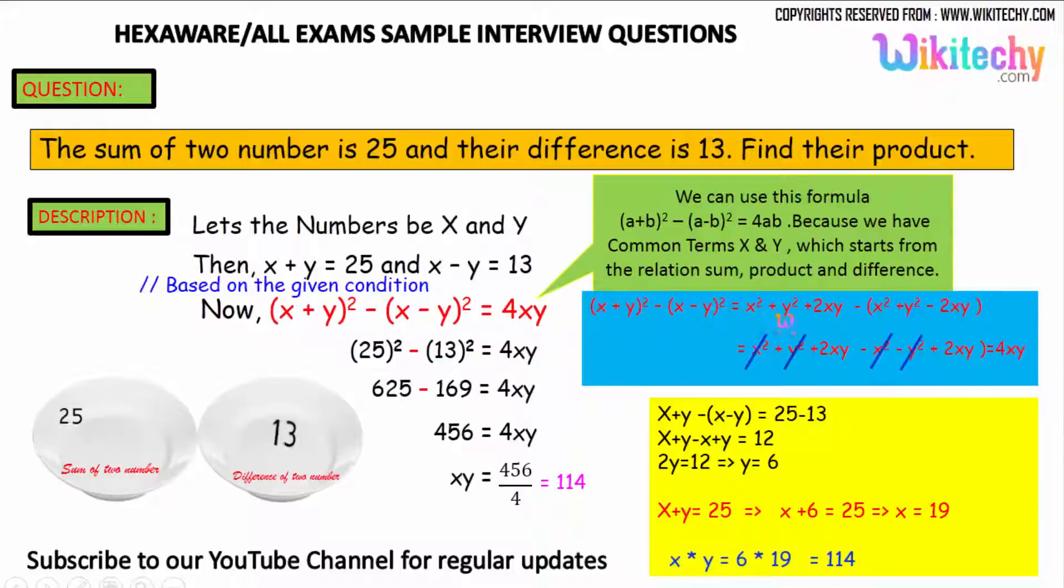Solving this, you get 4xy. So here, 25² - 13² = 4xy. So 625 - 169 = 4xy. Therefore, xy = 456/4, which equals 114. Their product is 114. This is option 2.